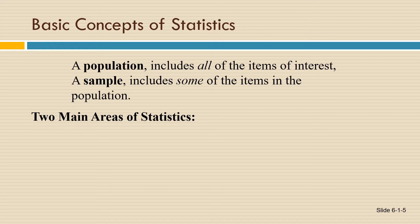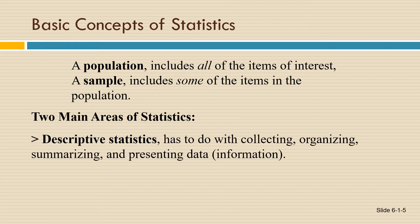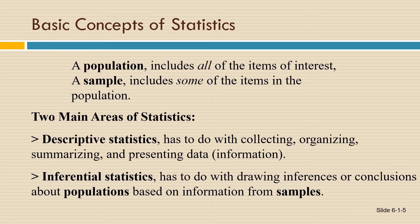This is related to the two main areas of statistics. Descriptive statistics has to do with collecting, organizing, summarizing, and presenting data. This is often what we do when we collect data from the entire population — for example, the U.S. Census that occurs every 10 years attempts to collect every single piece of information from the entire population of the United States. Inferential statistics has to do with drawing inferences or conclusions about populations based on information from just a sample of the population.